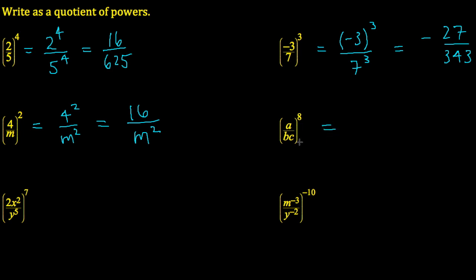Further to that, we can get expressions entirely full of variables. In this case, a divided by b times c, all raised to the exponent 8. It doesn't change. We're going to give that 8 to the a, to the b, and to the c. Everything will receive that exponent 8, and it will look like this: a raised to the exponent 8 divided by b raised to the exponent 8, c raised to the exponent 8.